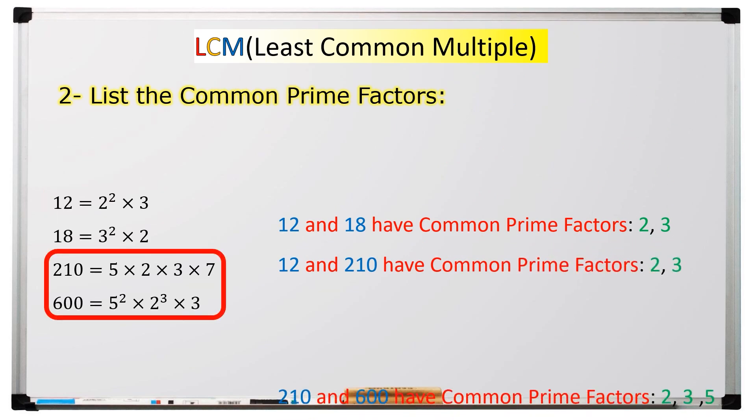Finally, two hundred ten and six hundred have more than two prime factors, which are two, three, and five.